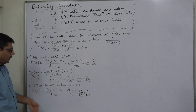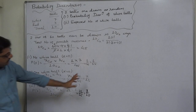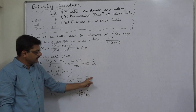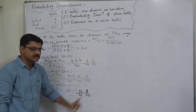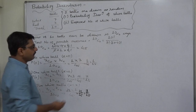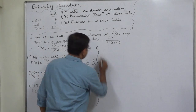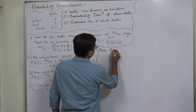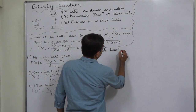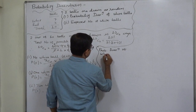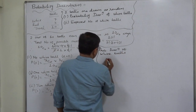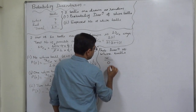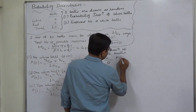If we draw two balls out of ten, the number of white balls can be either zero, one, or two — these are three mutually exclusive and exhaustive cases. The proof is that the summation of these three probabilities equals 1: 1/15 plus 7/15 plus 7/15 equals 15/15, which is 1. Now we can write the probability distribution of white balls.